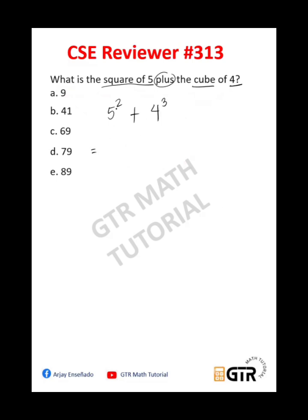Okay, so 5 square, that means 5 times 5. And then we have 4 cube. So 4 cube, that means 4 times 4 times 4. Three factors of 4 and then 5 square, two factors of 5.